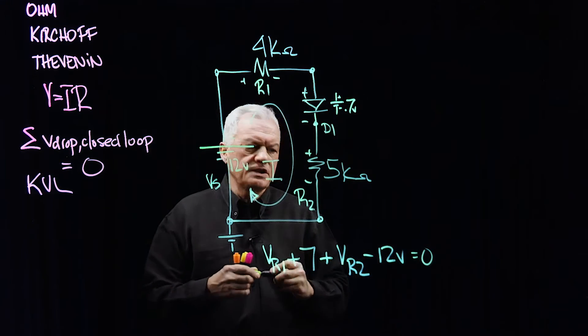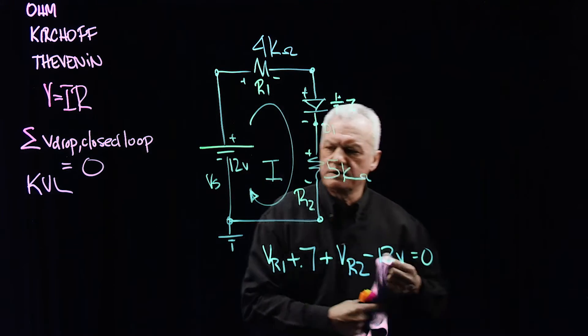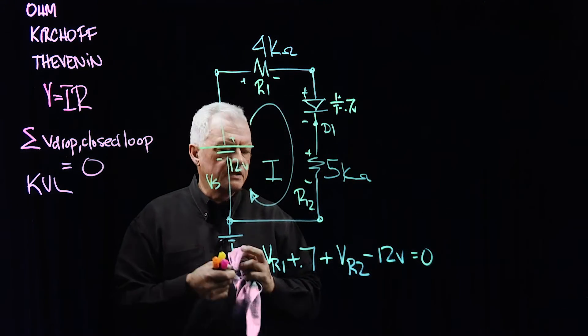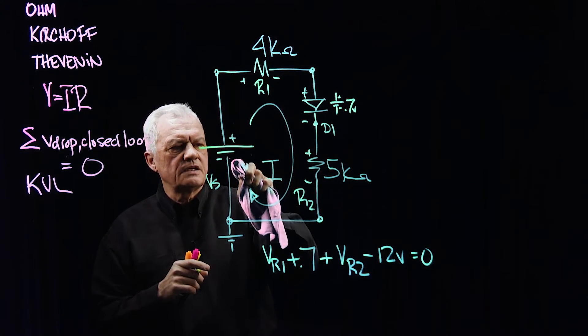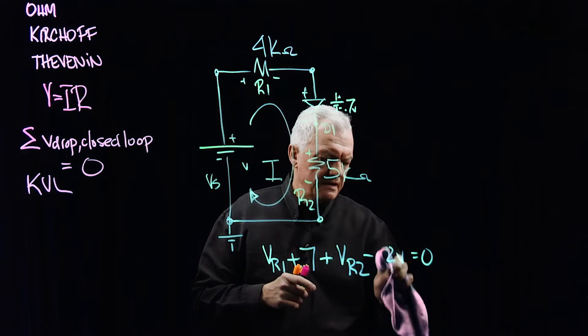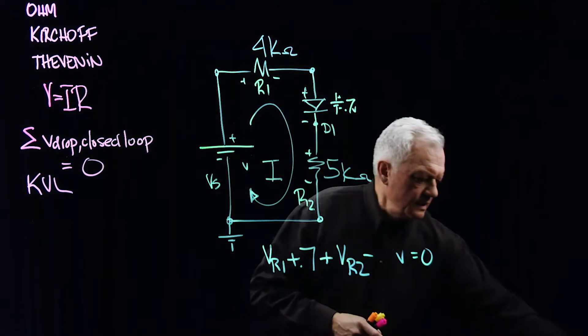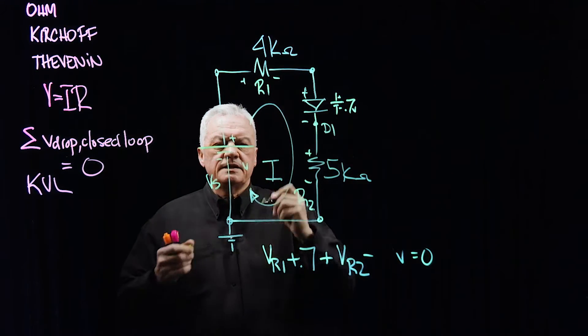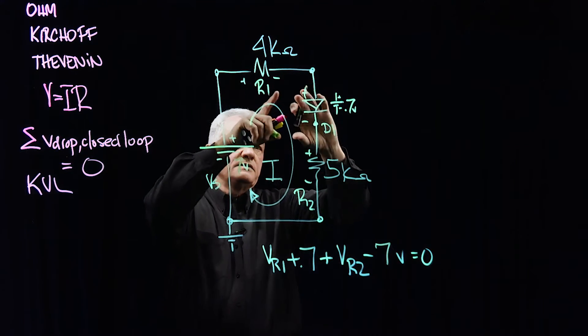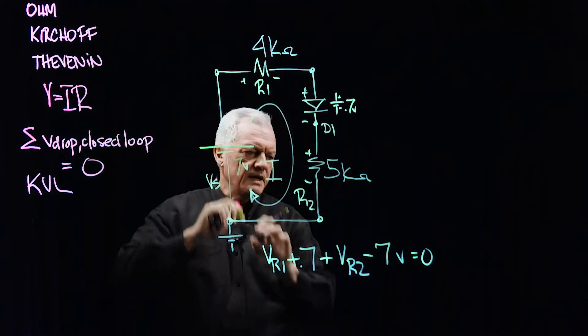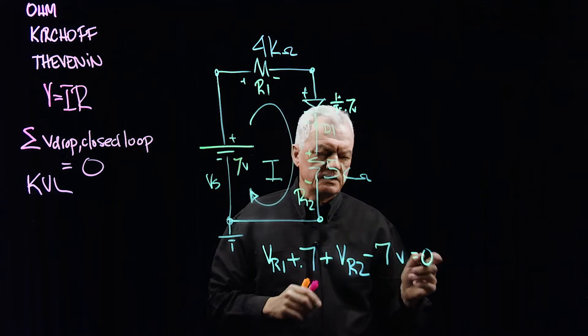Actually, you know what? I'm just going to change the numbers just for calculation purposes. It's not a big deal. What we'll do is change this to, let me just use seven volts. It will make the math a little easier. This is a seven volt source now. Again, VR one, diode drop, VR two, minus the source voltage, seven volts equals zero.